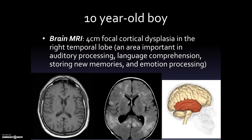This boy went on to have a brain MRI that showed a 4-centimeter focal cortical dysplasia in the right temporal lobe, which is a part of the brain important for auditory processing, language comprehension, storing new memories, and emotion processing. On a brain MRI, focal cortical dysplasia very often appears more white in color compared to the surrounding brain tissue.